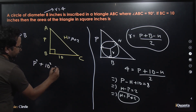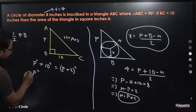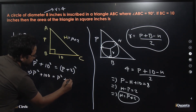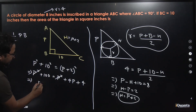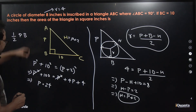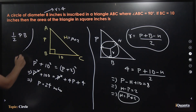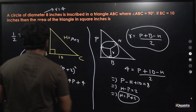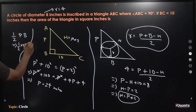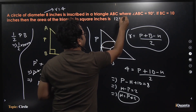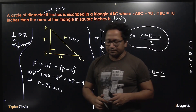Expanding: P² + 100 = P² + 4P + 4. The P² terms cancel, giving 100 = 4P + 4, so 4P = 96, and P = 24 inches. Now with P = 24 and B = 10, the area = (1/2) × 24 × 10 = 120 square inches. That is our answer: 120 square inches.